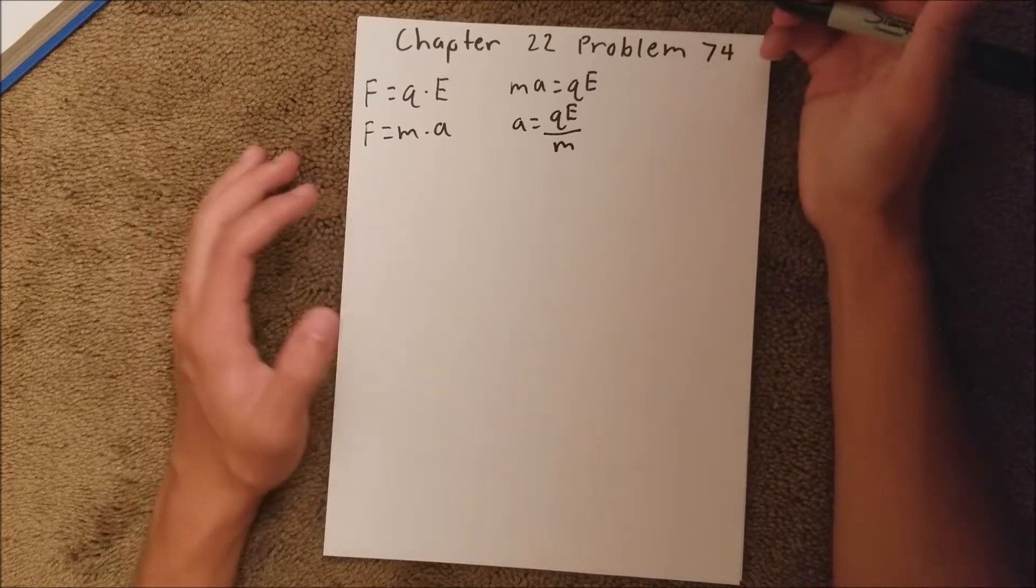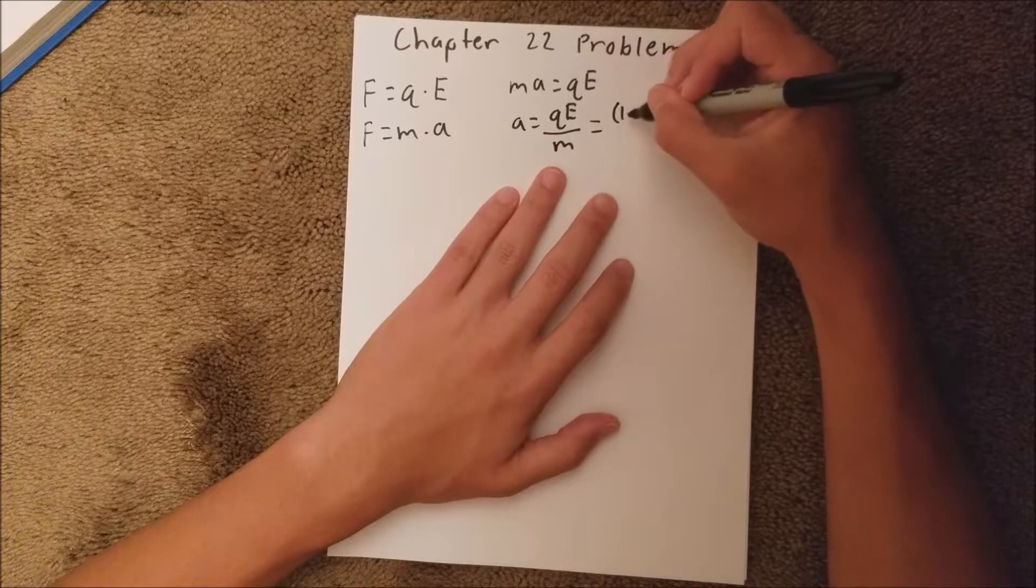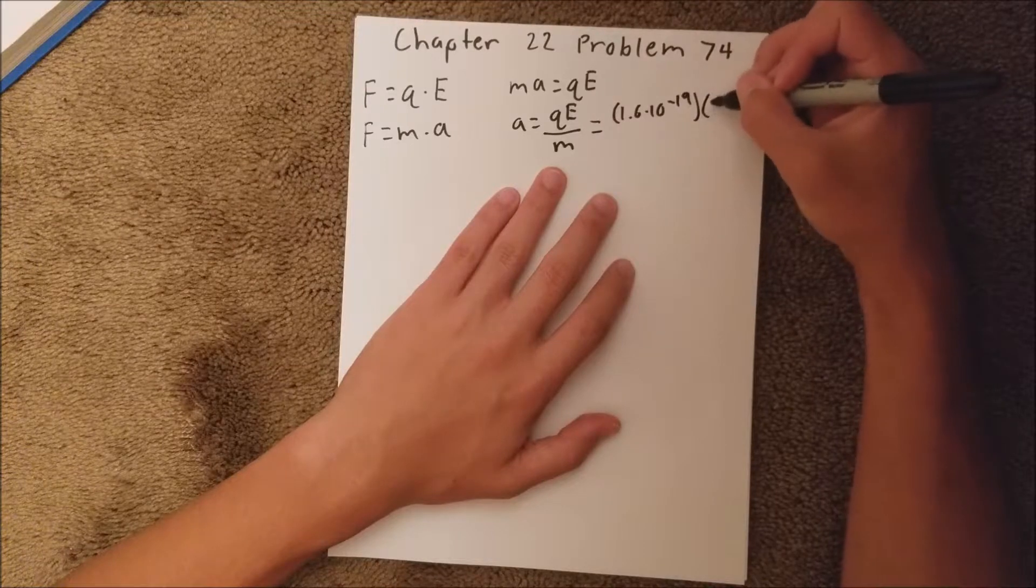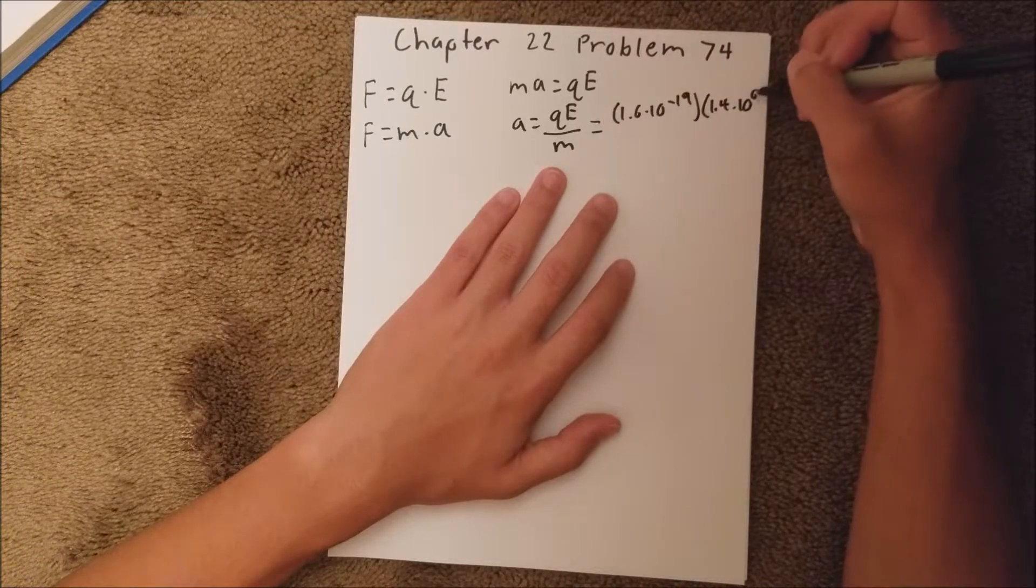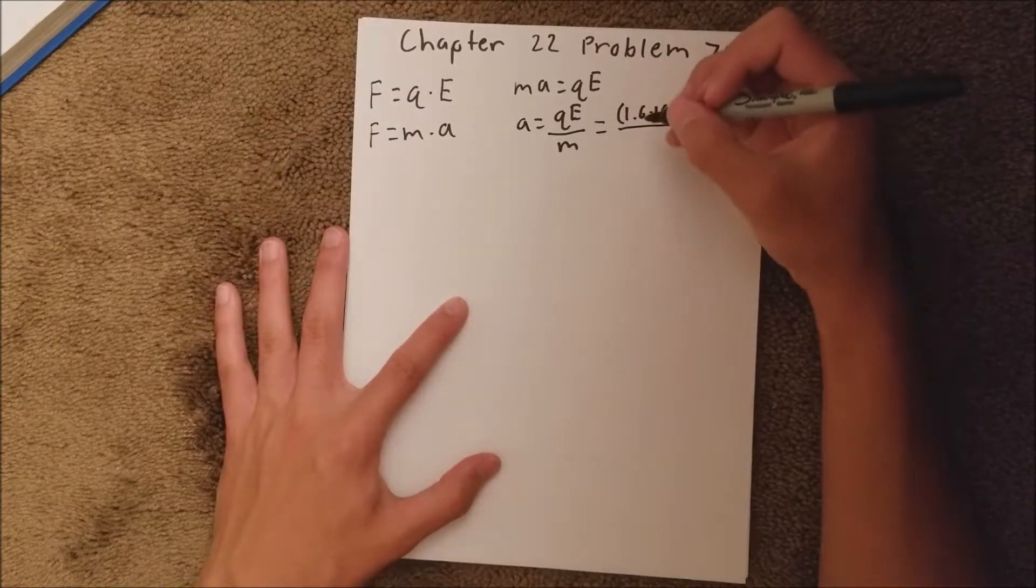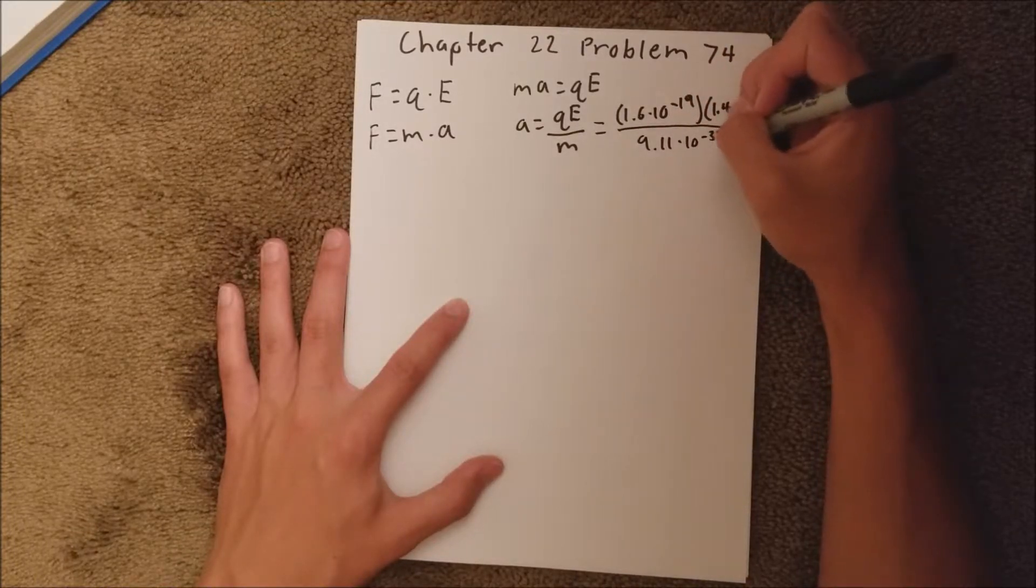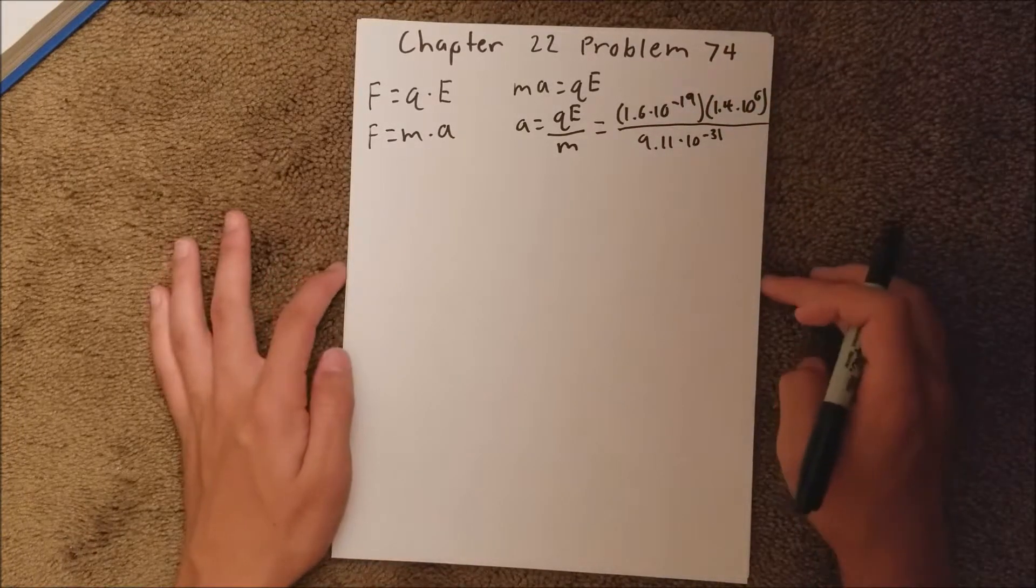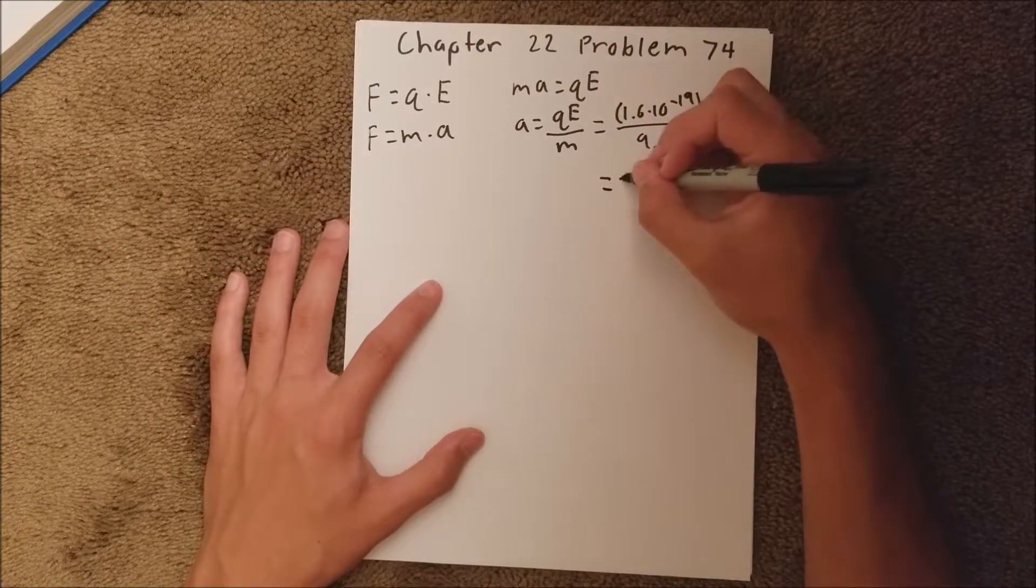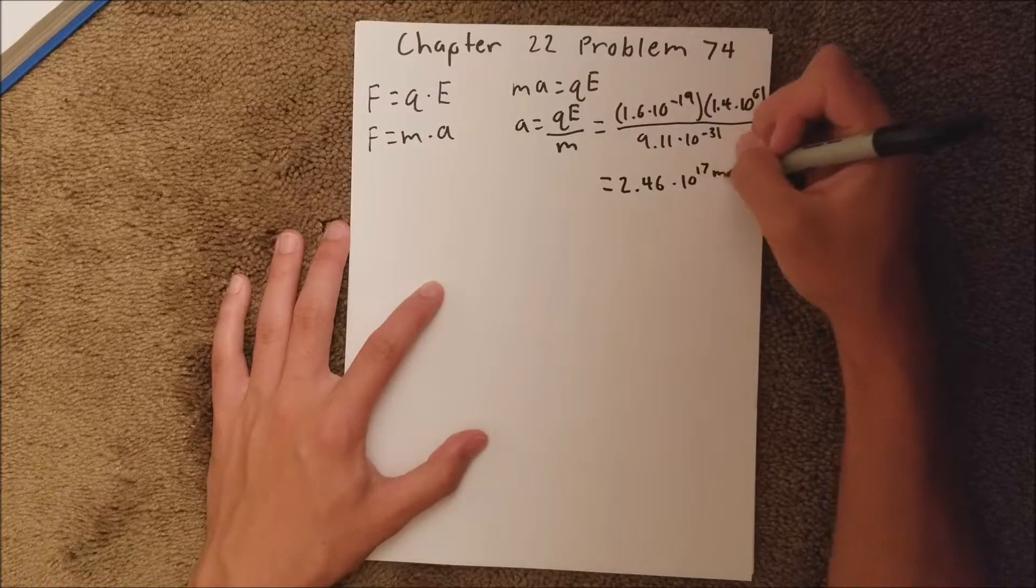And then we actually have those values, so we can say 1.6 times 10 to the negative 19th, times 1.4 times 10 to the 6th, and all that is over 9.11 times 10 to the negative 31st. And that equals 2.46 times 10 to the 17th meters per second squared.